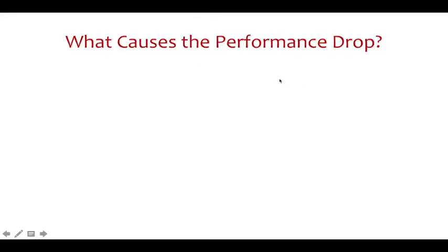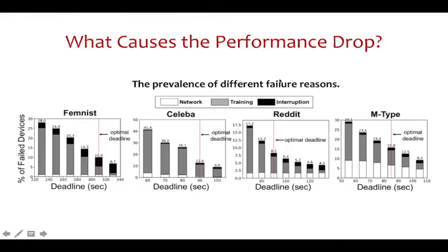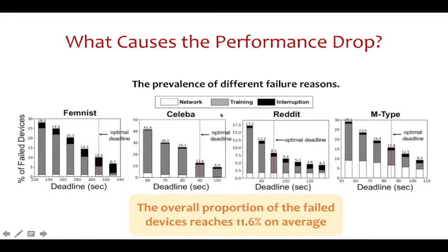Another question we want to answer is, what causes the performance drop of FL algorithms? Here, we report two phenomena that are particularly obvious under heterogeneity-aware settings, according to our experiments. First, we find that participating devices can fail to upload their local model updates for several reasons, including unreliable network, excessive training time, and dropout caused by user interruption, which are noted as network failure, training failure, and interruption failure, respectively. According to our experiments, the overall proportion of failed devices reaches 11.6% on average, even when an optimal setting is given. We think these failures could cause a waste of valuable device resources, like computation and energy. This will slow down the global model convergence. So, the first factor that could cause the performance drop is device failure.